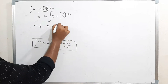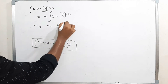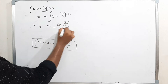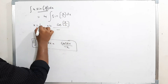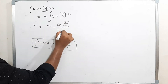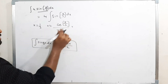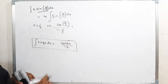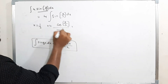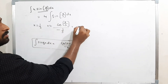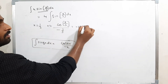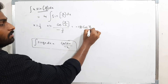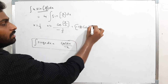So integration of sin(x/3) is cos(x/3)/(−1/3). The 1/3 in the denominator goes to the numerator giving -3. Therefore 4 times (-3)cos(x/3) = -12cos(x/3). This is the integration value.